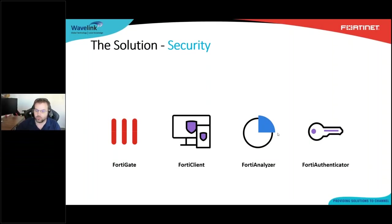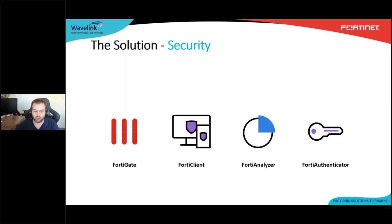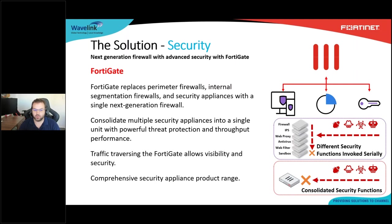Thank you Colin, that was really well done. The next topic is security. The security fabric includes multiple pieces: the FortiGate, FortiClient, FortiAnalyzer, and the Authenticator, all communicating together to provide overall security for your entire network. The FortiGate replaces the perimeter firewall, internal segmentation firewalls, and security appliances with one single next-generation firewall. This device can be placed in the center of your network, replacing the core switch, so all routing functions are done on this device. Switching just becomes switching again. It consolidates multiple security appliances into a single unit with powerful threat protection and throughput performance, powered by Fortinet's ASIC chips.